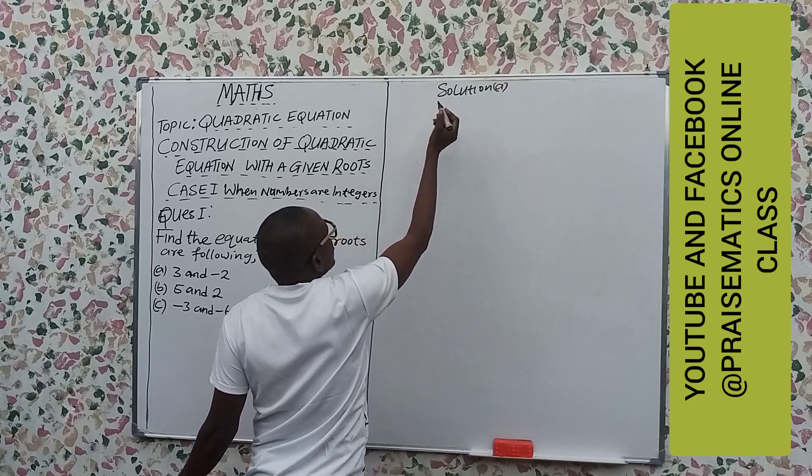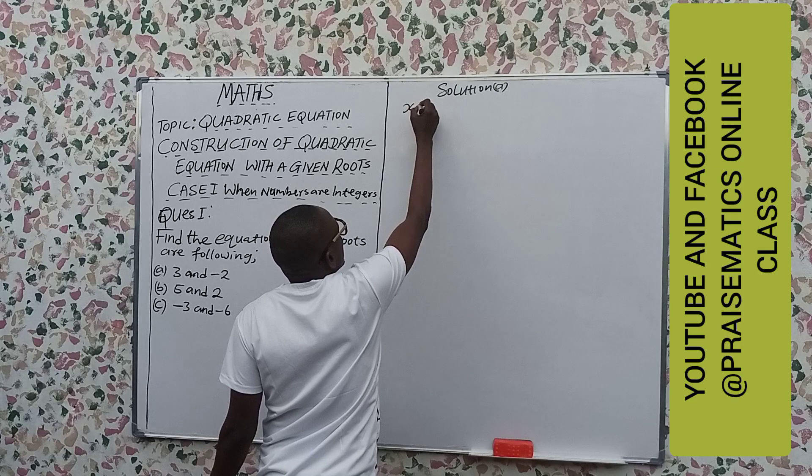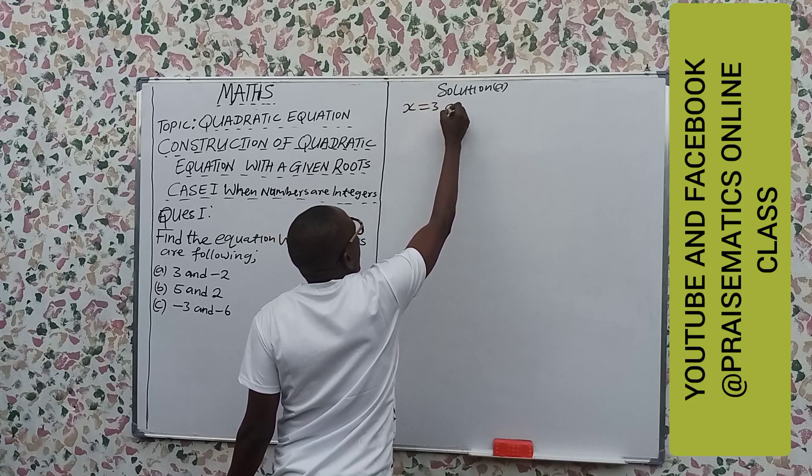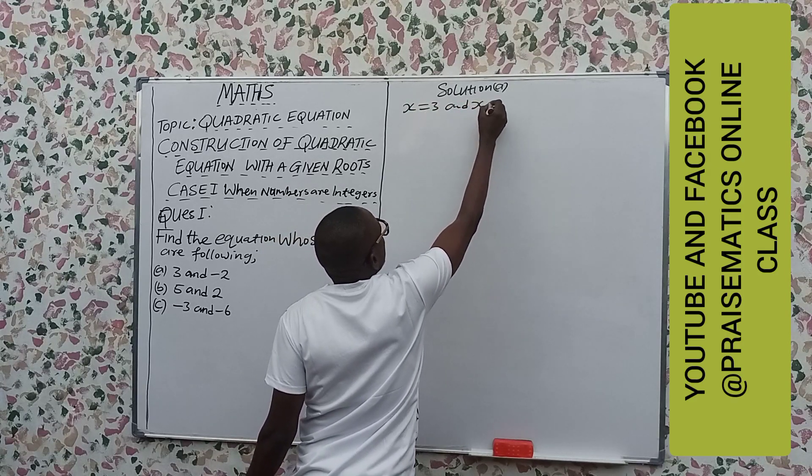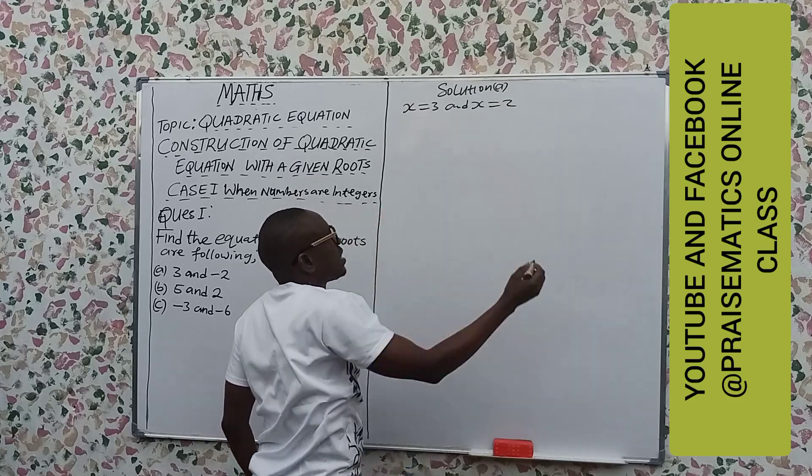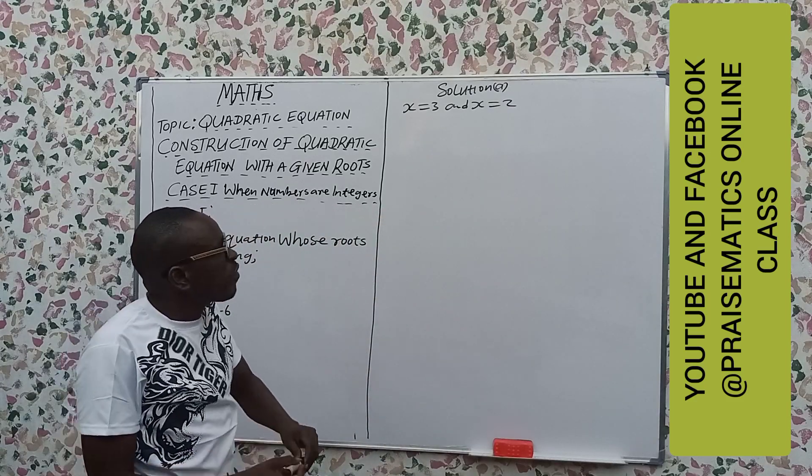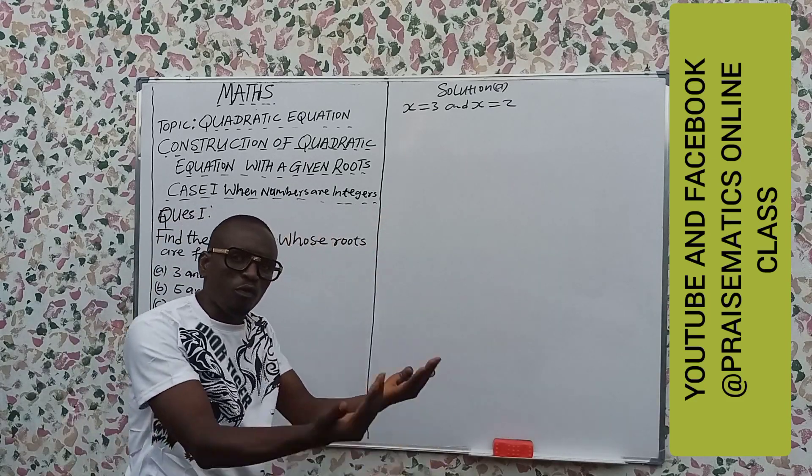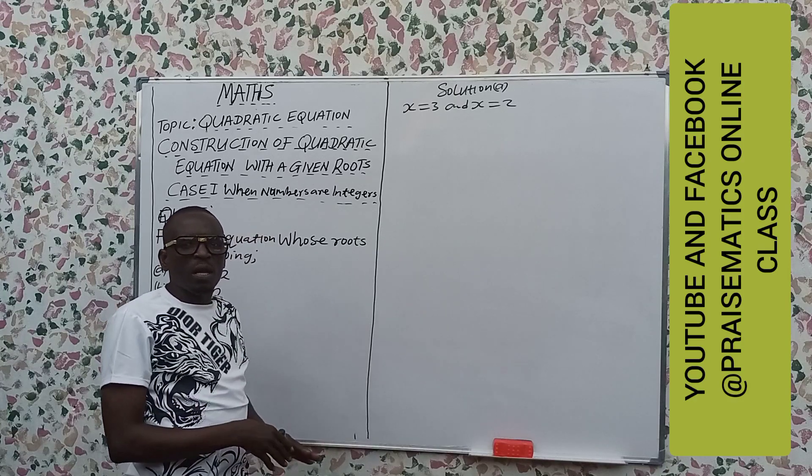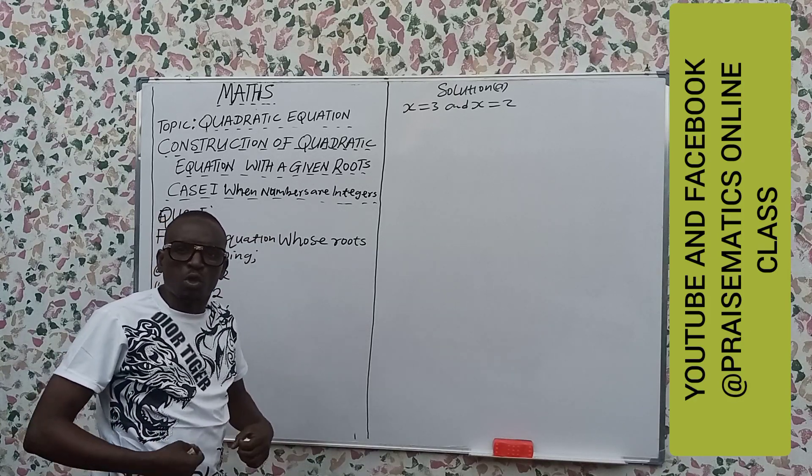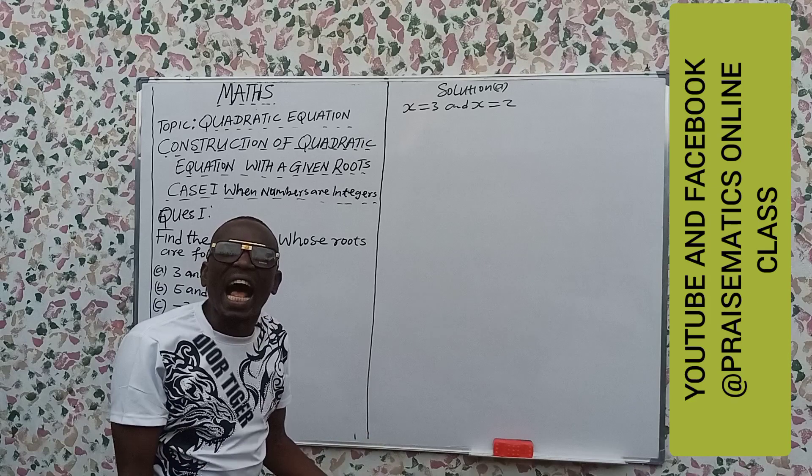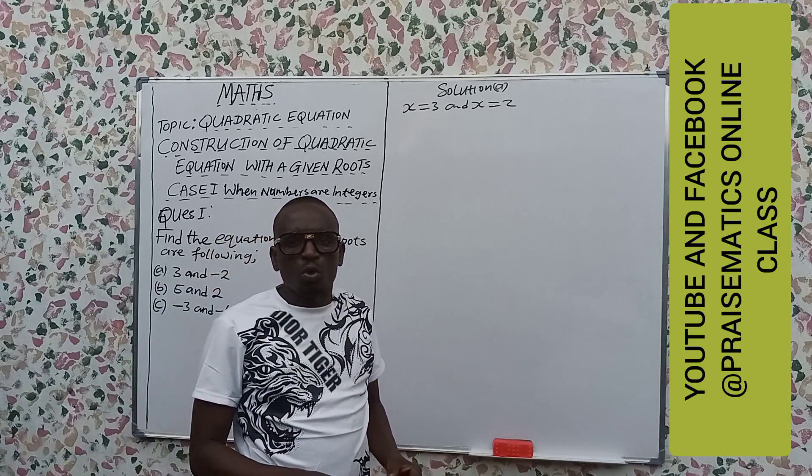We have that x is equal to 3 and x equal to minus 2. We know that this is the quadratic equation that will give us the solution and ask us to form the quadratic equation.